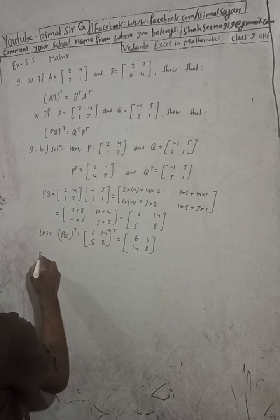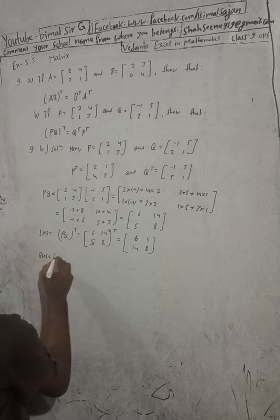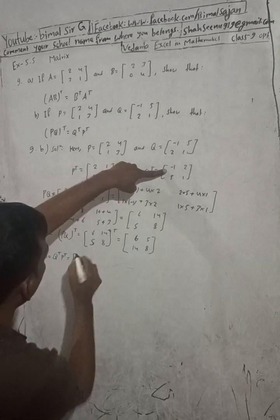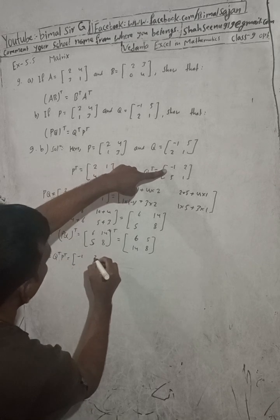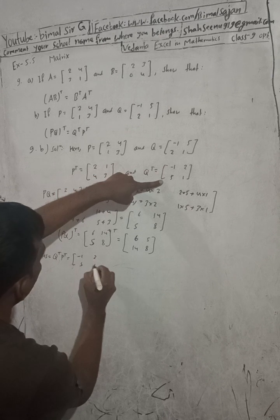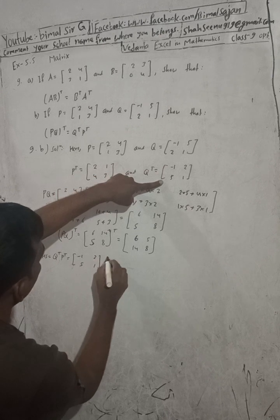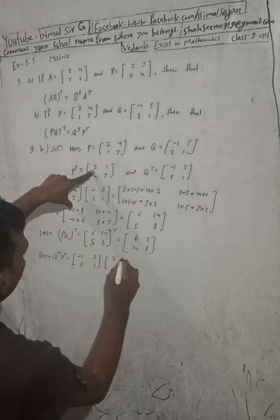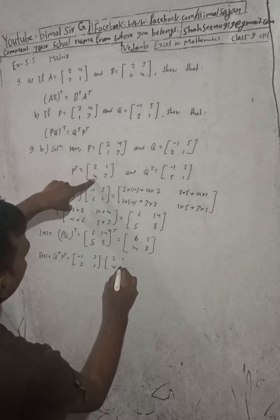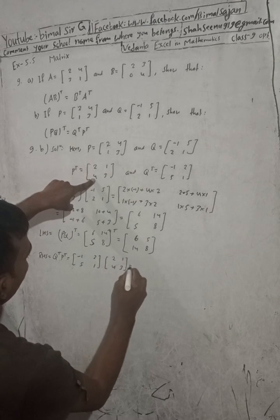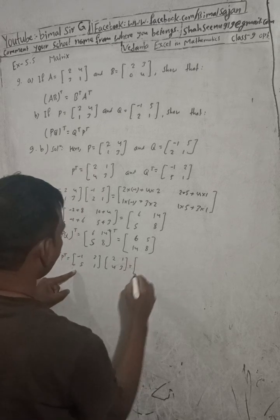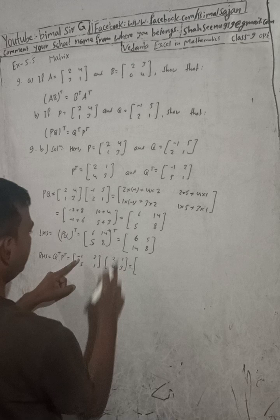Now RHS: Q transpose into P transpose. Q transpose = [-1,2; 5,1] and P transpose = [2,1; 4,3]. First row with first column: (-1)×2 + 2×4. First row with second column: (-1)×1 + 2×3. Second row with first column: 5×2 + 1×4. Second row with second column: 5×1 + 1×3.